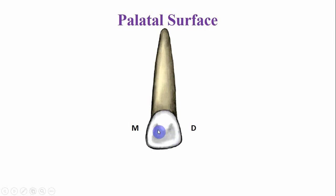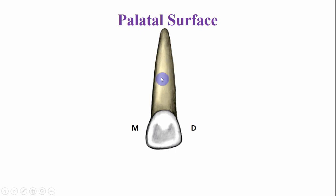The palatal surface — the palatal fossa — is more concave. You can also see some part of the distal side and some of the mesial side of the root from the palatal aspect.